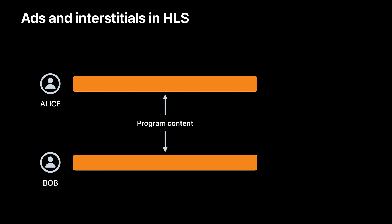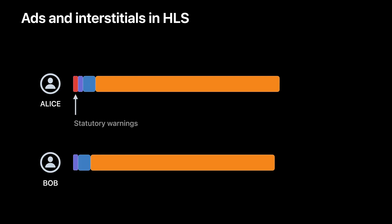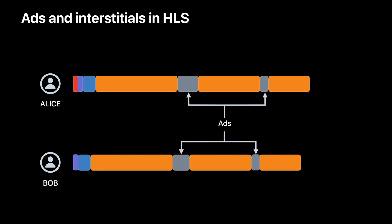Now let's take a look at the case where Alice and Bob are trying to watch some program content. What we see here are the presentation timelines at their respective ends. If it is only the program content that they're watching, then it should be pretty straightforward to achieve coordinated playback. You'd simply associate the group session with the playback coordinator, and you'd be good to go. Now let's say each of them have a program recap segment stitched in, which is preceded by the studio or network banner. Since the recap segments and the banners match for Alice and Bob, coordinated playback is still achievable.